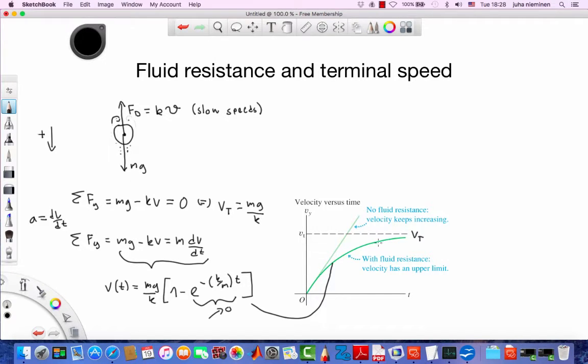And this behavior of velocity is in stark contrast with the assumption when there is no drag. So in that case, the VT is the usual or the familiar acceleration times T. So in most cases, neglecting the drag leads into a substantial error in the calculations.